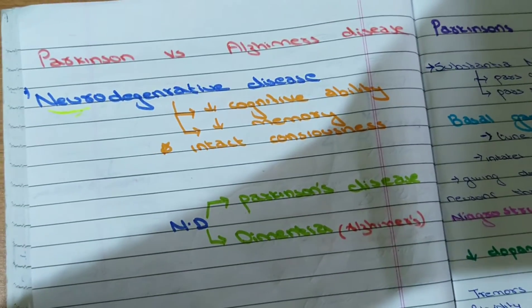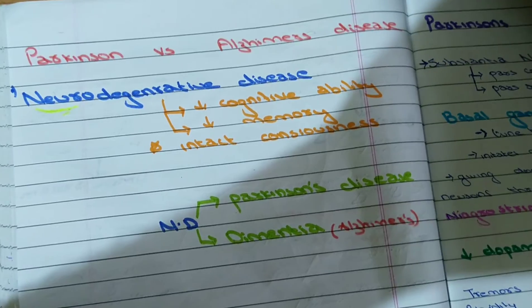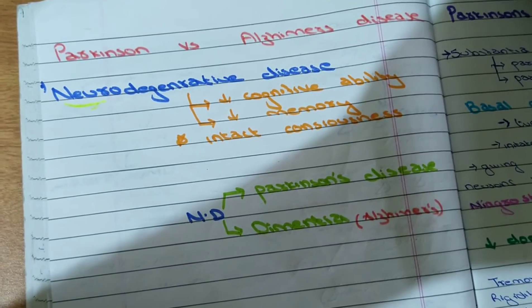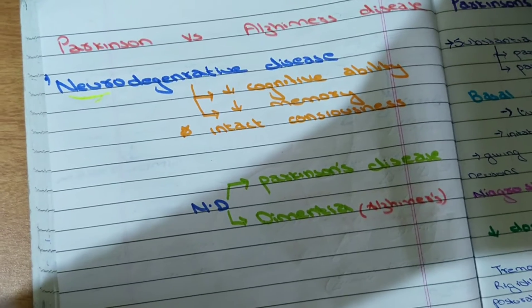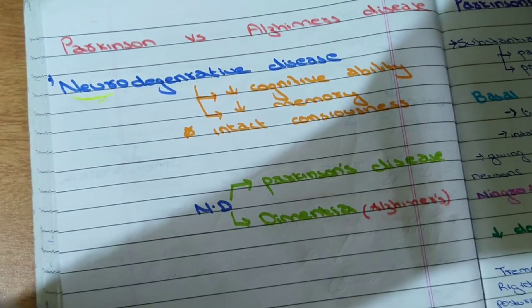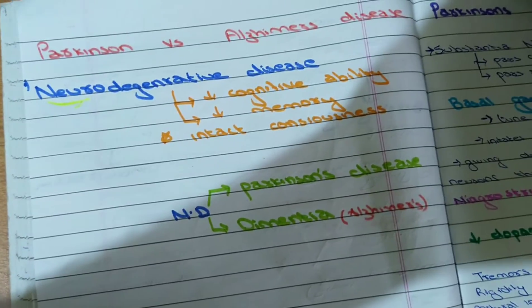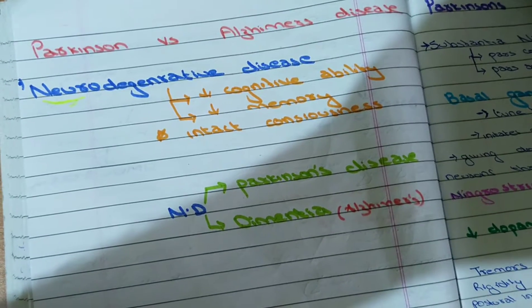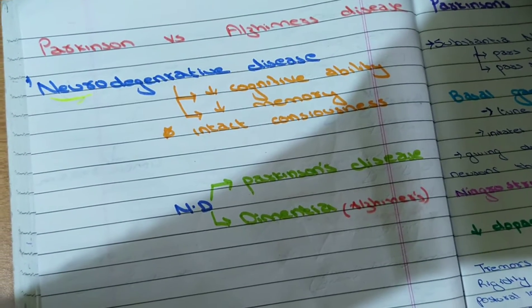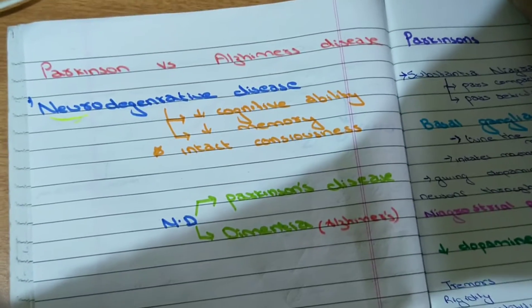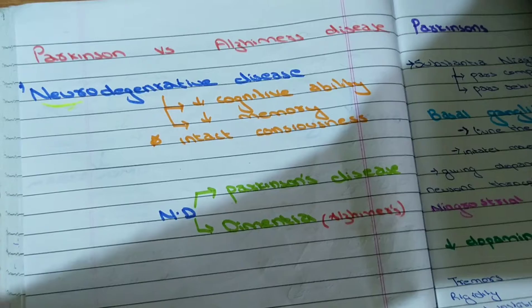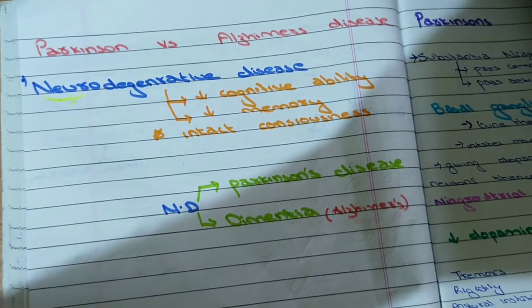The main symptoms of neurodegenerative diseases are decrease in cognitive ability - the process of thinking, knowing, perceiving information and judging upon it. There will be a loss of memory too, technically termed as amnesia. One important thing about neurodegenerative diseases is that consciousness is intact, so the patient won't lose consciousness.